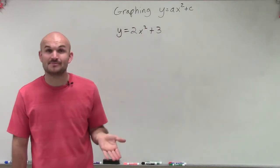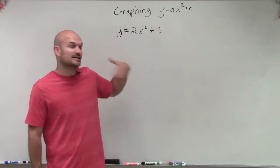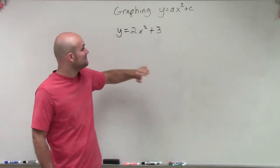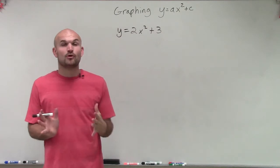And the axis of symmetry was always at x equals 0. Well, in this case, now our vertex is going to change as long as we have a value for c. But our axis of symmetry is still going to remain the same.